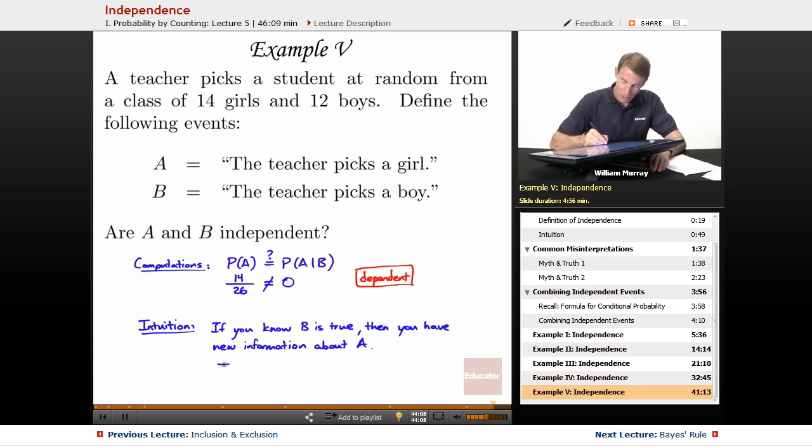So, in fact, these events are disjoint. There's no overlap between them, which means that if you know one is true, then you know the other one is false. You do get some new information, which means they're not independent, which means they're dependent.